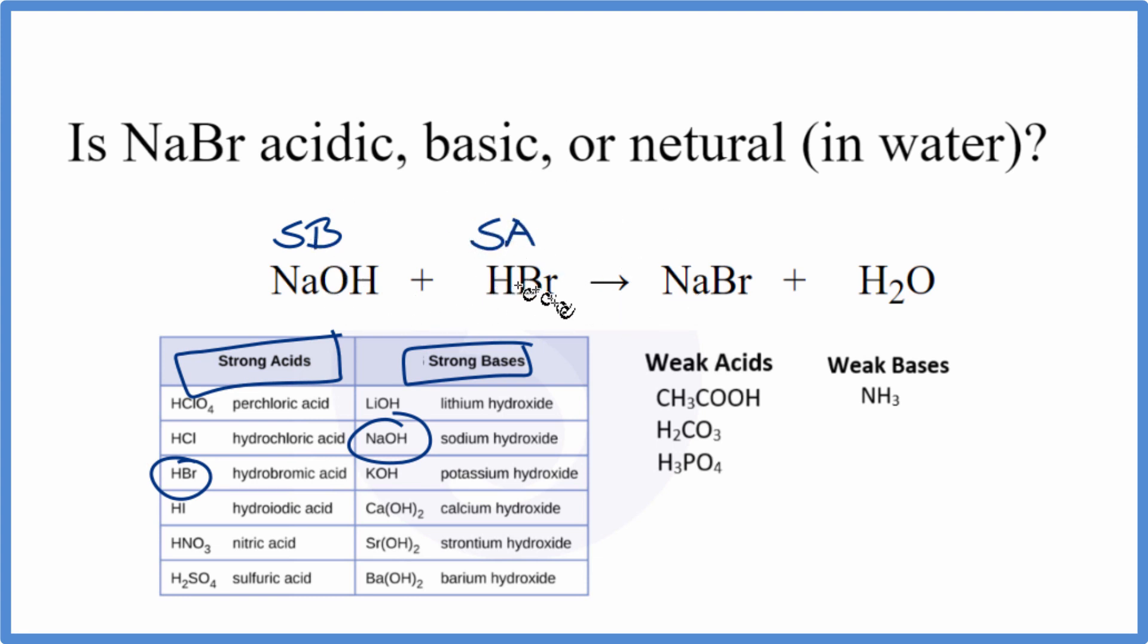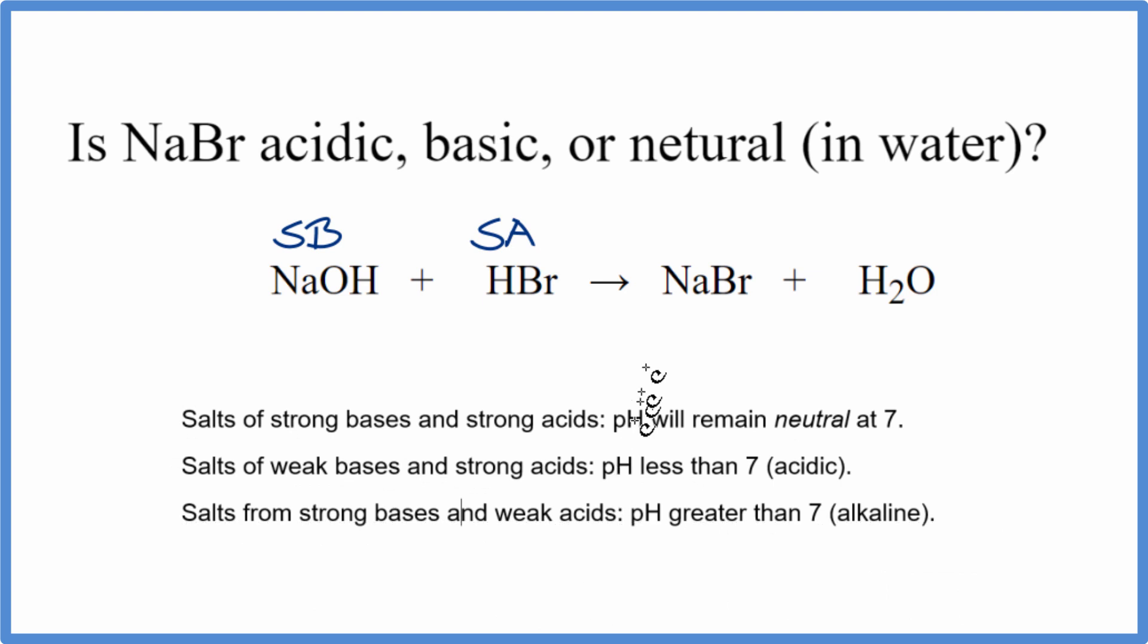So now we know the strength of each of these substances. If we have a strong base, like our sodium hydroxide, and a strong acid, like the hydrobromic acid, when they neutralize each other, they'll form a salt, sodium bromide.